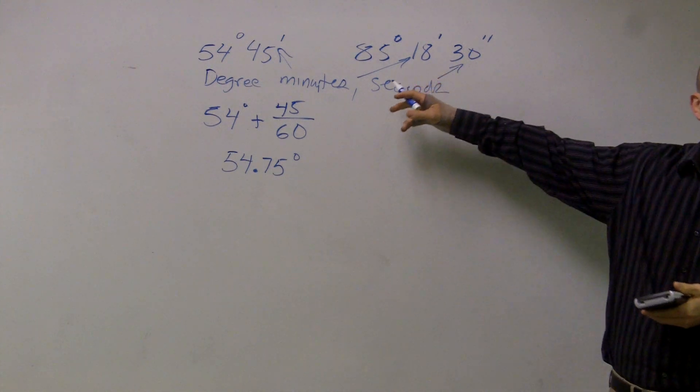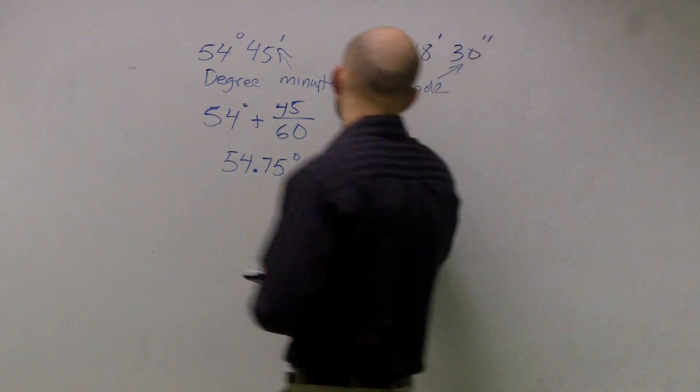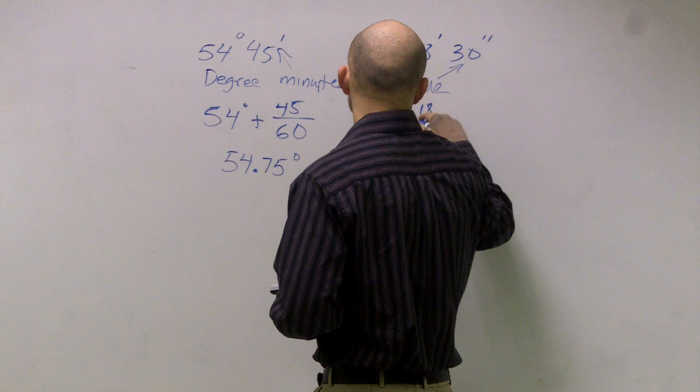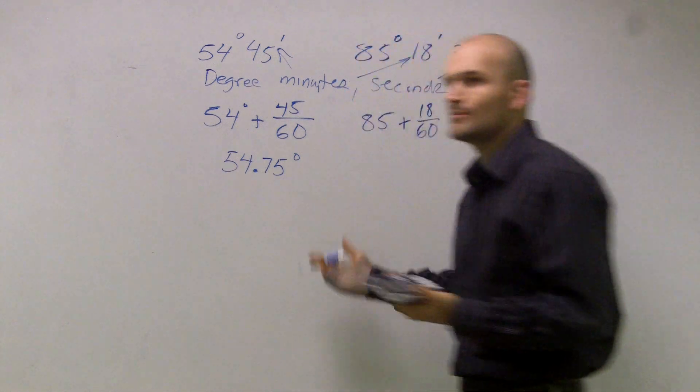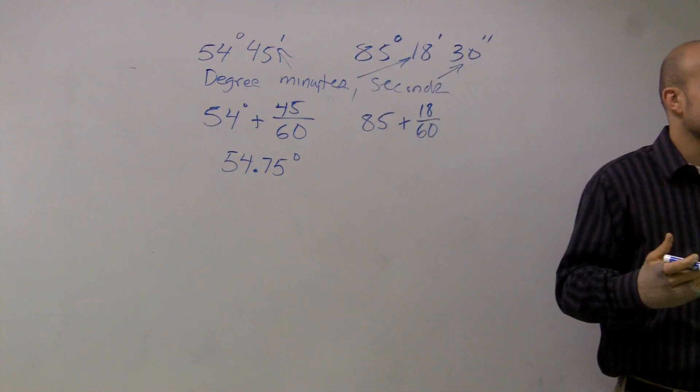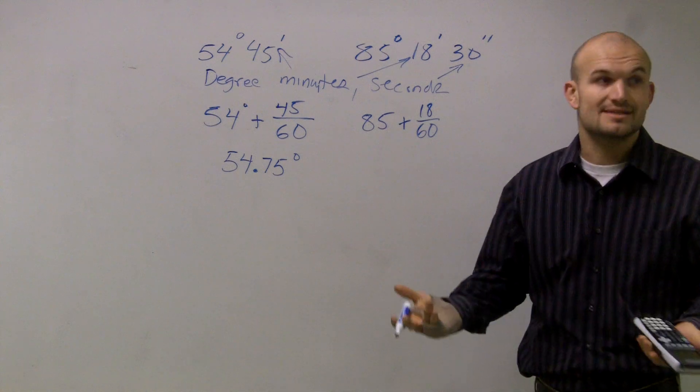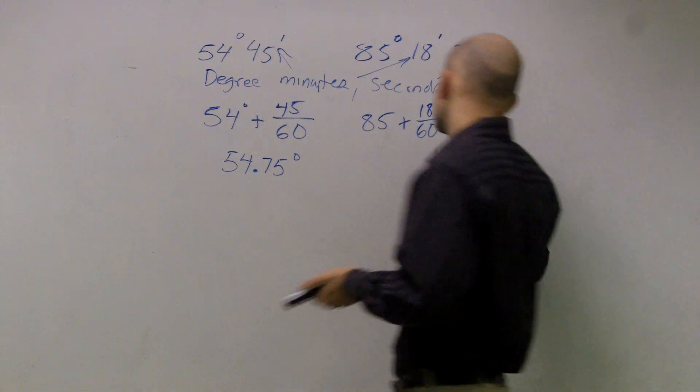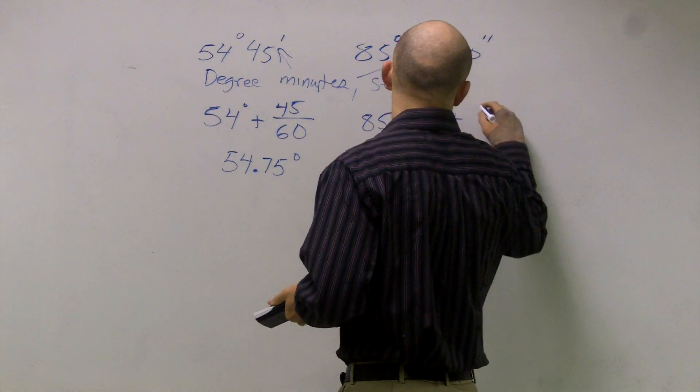And then for this one, now you have minutes and seconds. So this one would be 85 plus 18 over 60. And then we're talking about seconds now. How many seconds are in a minute? 60. And then you have 60 minutes in an hour. So it would be 60 times 60, which is 3,600.